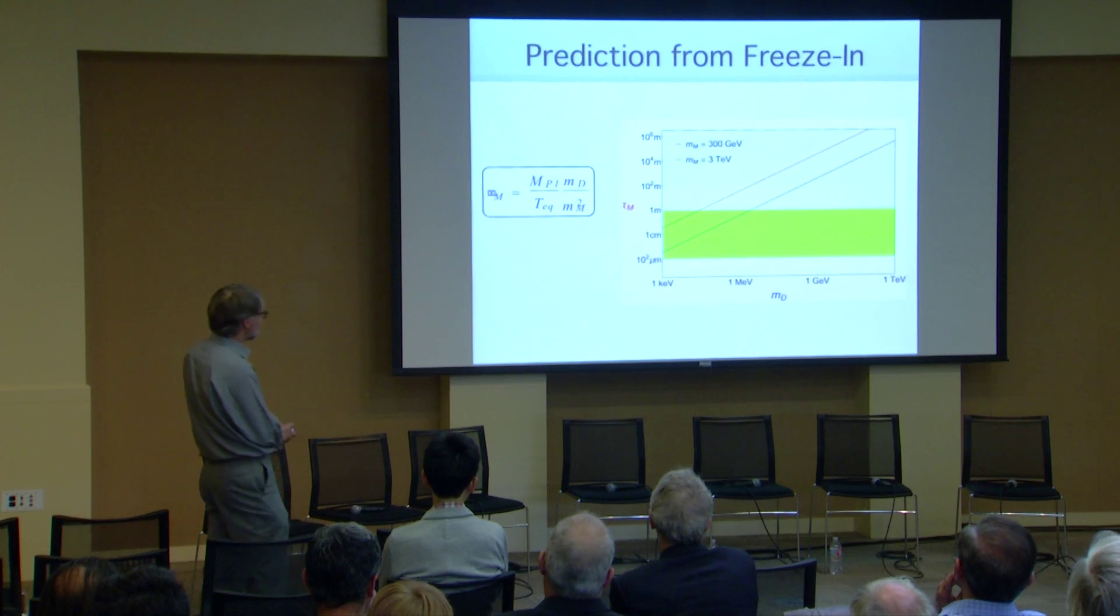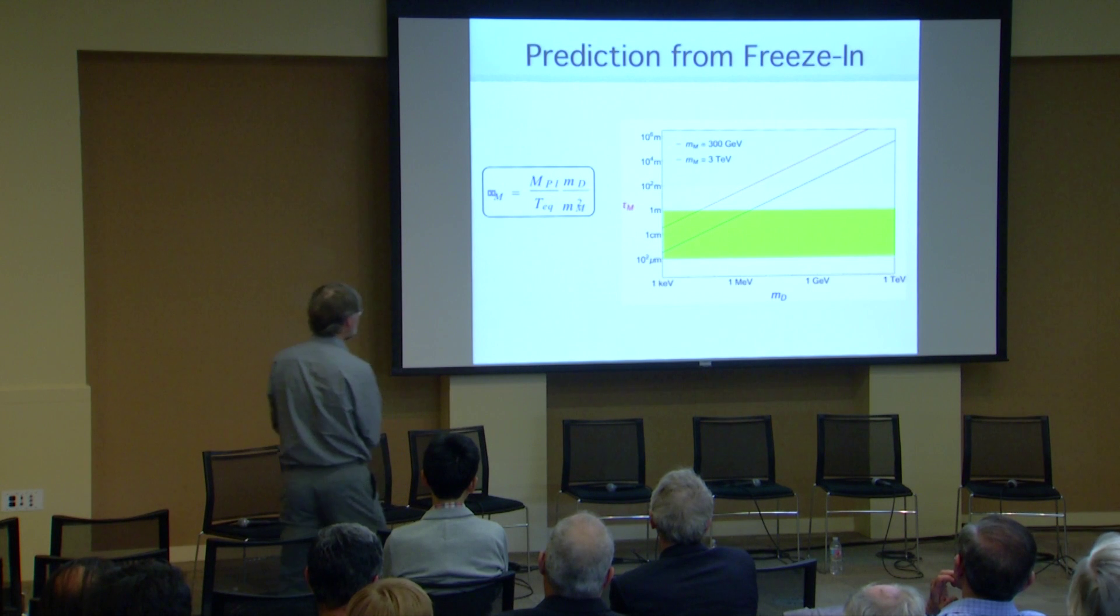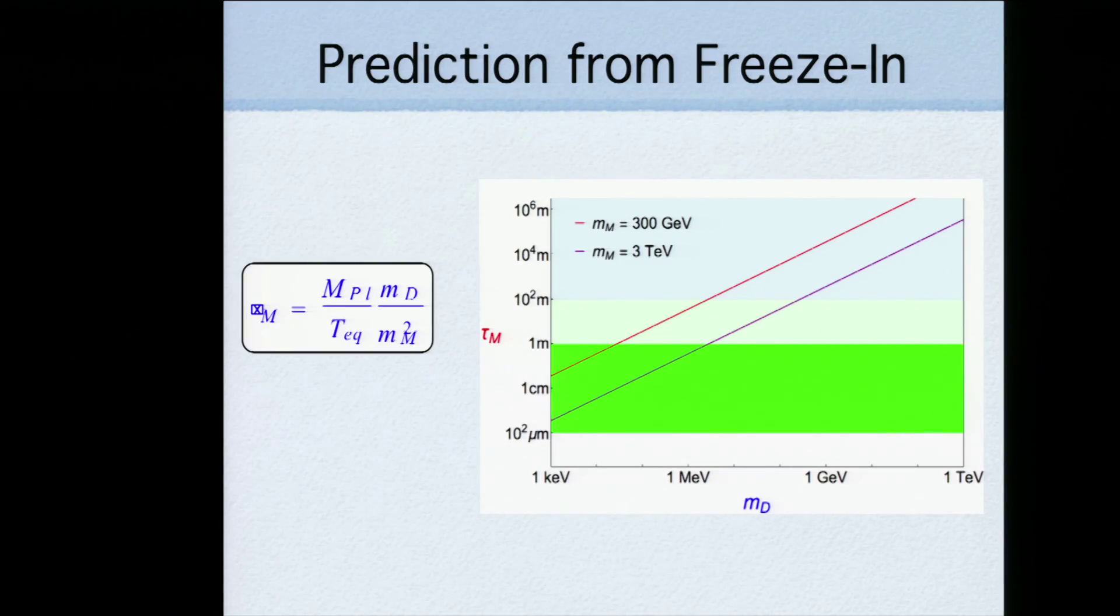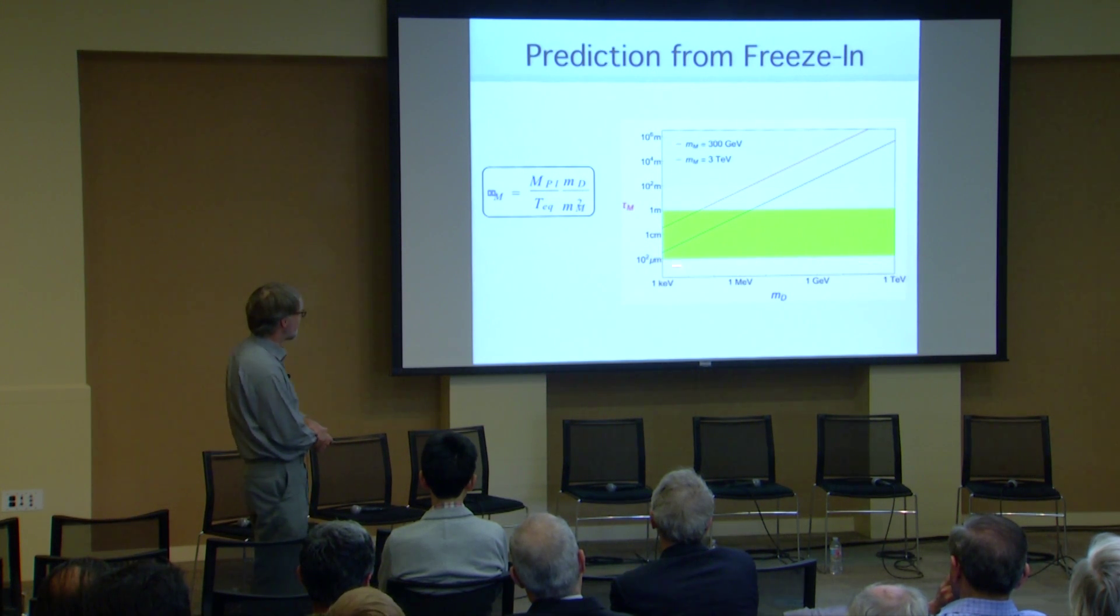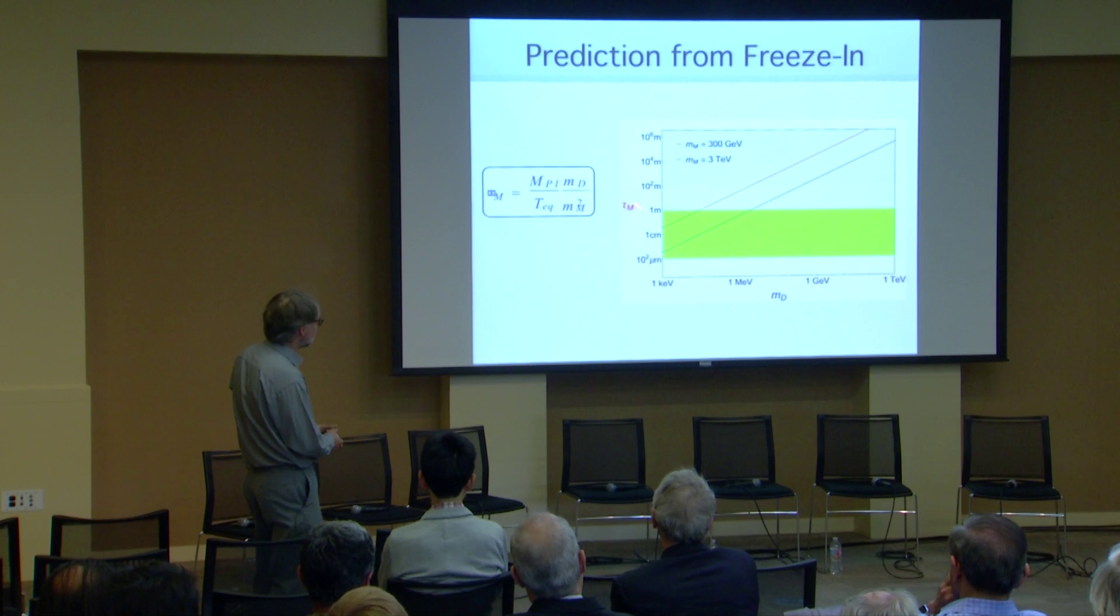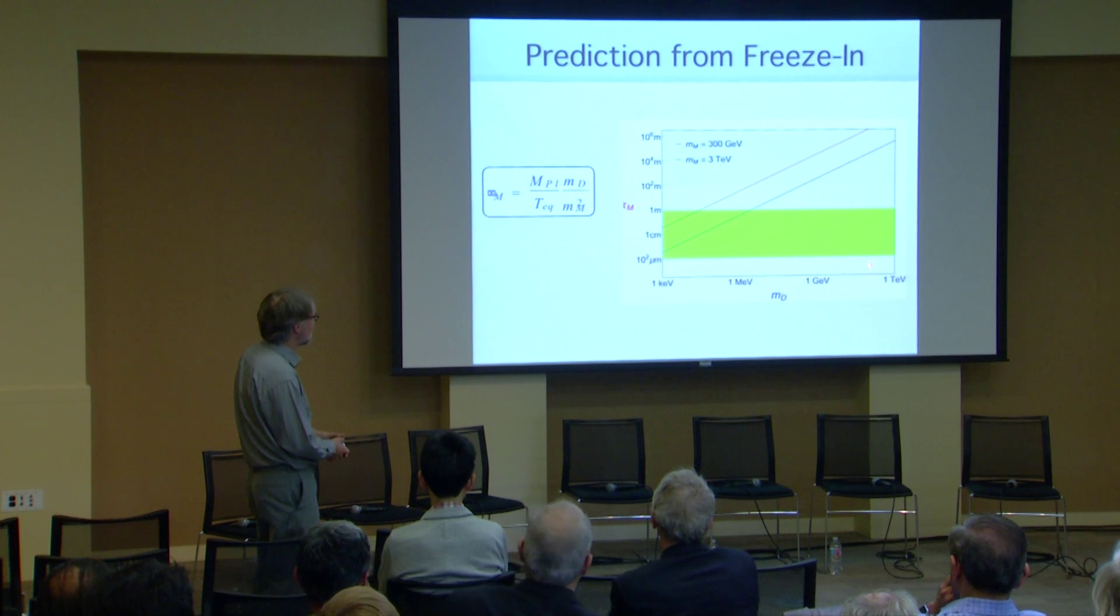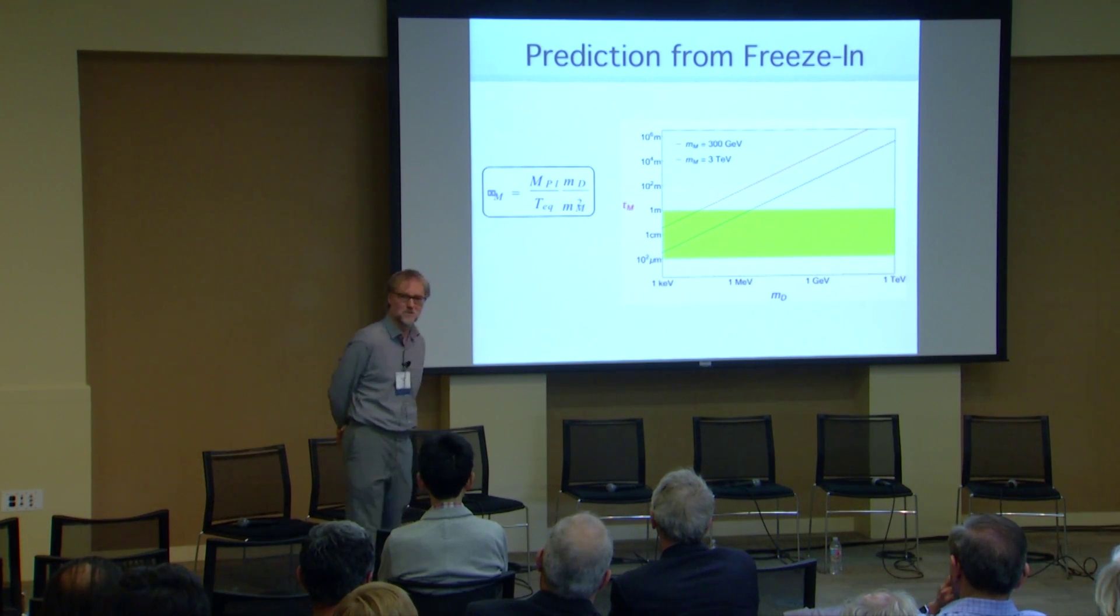But each of these three detection mechanisms gives a lifetime or the distance lifetime between less than a centimeter all the way up to kilometers, and we can experimentally test these lifetimes. So, everything that's colored here, we can actually see. So, what is the prediction from freeze-in? Here's the key slide, and I've only got, I think, another one after this. Here's the key slide which gives you the prediction for, let's suppose the mother particle weighs 300 geV, so we can make it at LHC. Then this red curve here gives you the predicted lifetime as a function of the dark matter mass in order that it gives you the right dark matter abundance.